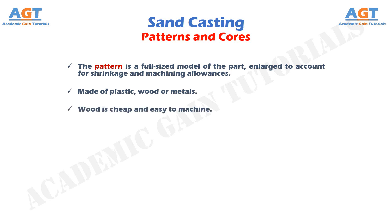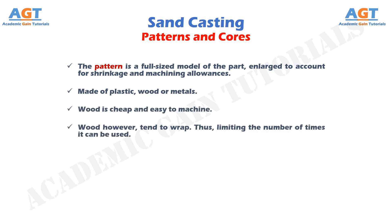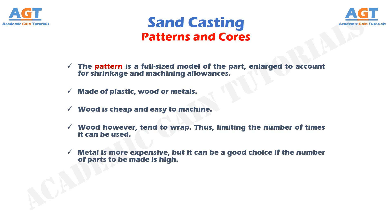Wood is cheap and easy to machine. However, wood tends to warp, thus limiting the number of times it can be used. Metal is more expensive, but it can be a good choice if the number of parts to be made is high. Plastic represents a compromise between wood and metal.